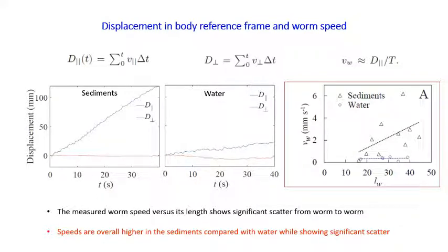By contrast, in water it also moves predominantly along its head direction but slides around a little more laterally. When tracked for much longer, the motion tends to be essentially toward the head, so in that sense it is a directed random walker seeking its way through the cell.